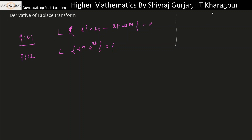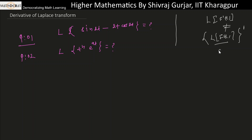We are discussing the derivative of Laplace transformation. We have seen Laplace of a derivative of a function; this time we are seeing the derivative of the Laplace transformation. These two are not the same — one gives small f-dash(t), and the other gives the Laplace of f-dash(t), which is p·F(p) minus f(0). So of course they cannot be equal.